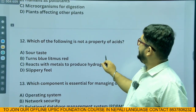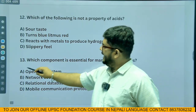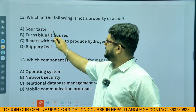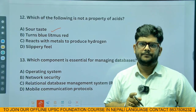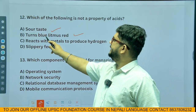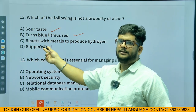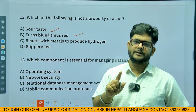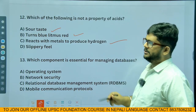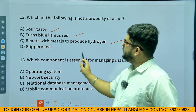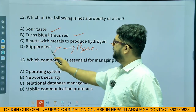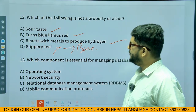Which of the following is not a property of acids? Sour taste — correct property. Turns blue litmus paper red — correct property. Reacts with metals to produce hydrogen — correct property. Slippery feel is not a property of acids — that is a property of bases. So option D, slippery feel, is the correct answer.